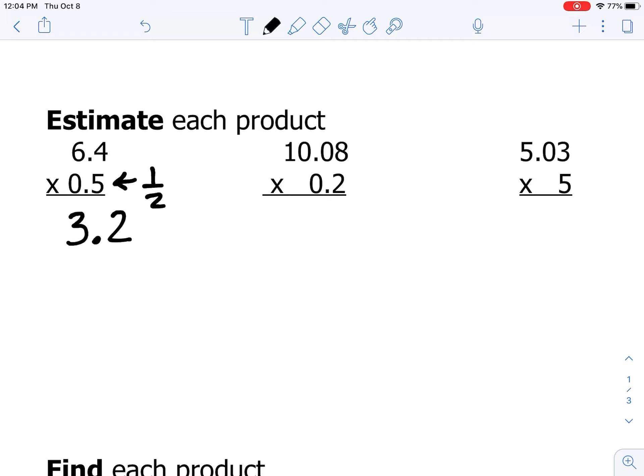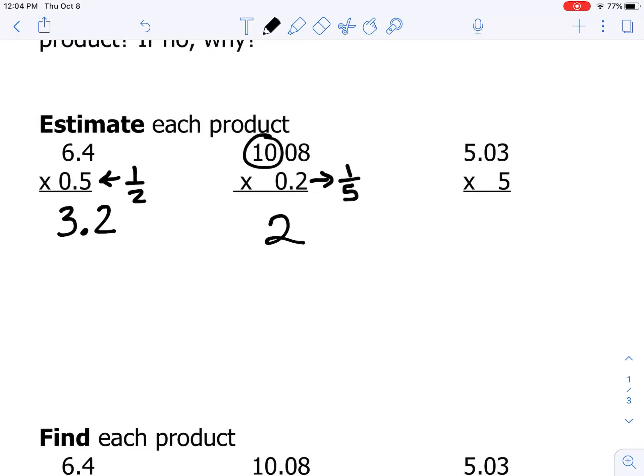Number two, I know that 0.2 is the same as one fifth. So if I split 10 up into five equal groups, I'm going to have 2 in each group. So I think the product will be close to 2.